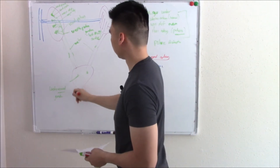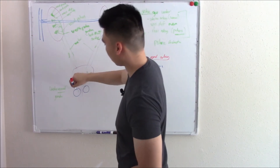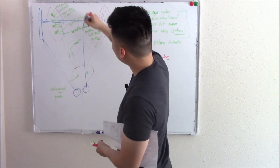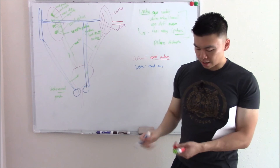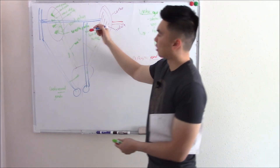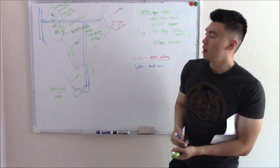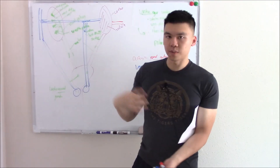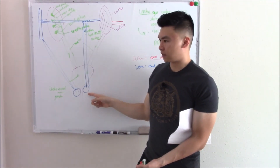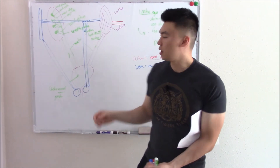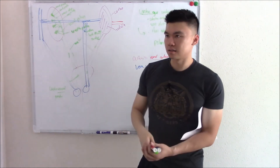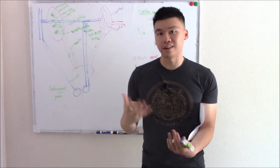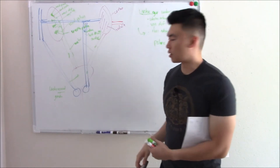Regarding your gonads: the right gonadal vein drains directly to the IVC, but the left gonadal vein drains into the left renal vein first, then travels over to the IVC. This is clinically important — if there's venous congestion of the left renal vein, it backs up into the left gonadal vein, causing a left-sided varicocele or left testicular pathology. Also, left renal cancer can spread to the left testicle because their veins are connected. Very commonly tested.